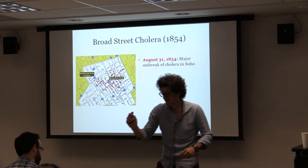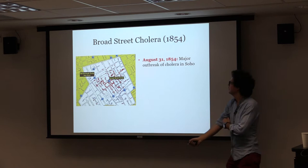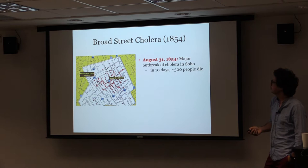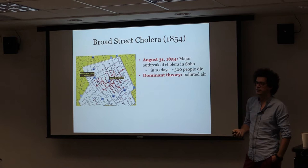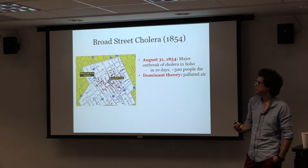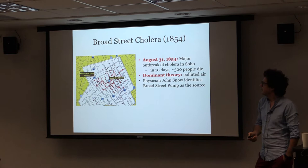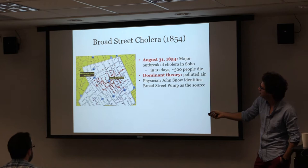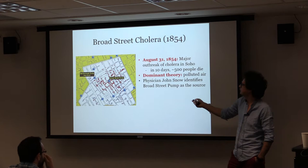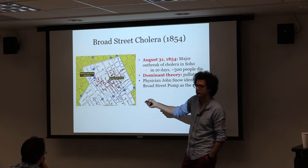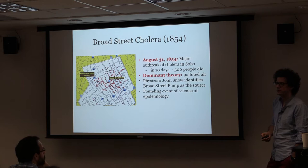This figure depicts cholera cases in Soho in London. There was an outbreak in 1854 where about 500 people died in 10 days. The dominant theory at the time was that it was a polluted area. Physician John Snow actually identified a water pump as the cause of the disease. This map shows cases of cholera and the water pumps in Soho, and John Snow realized that cases are concentrated around this pump. That's a founding event in the science of epidemiology.